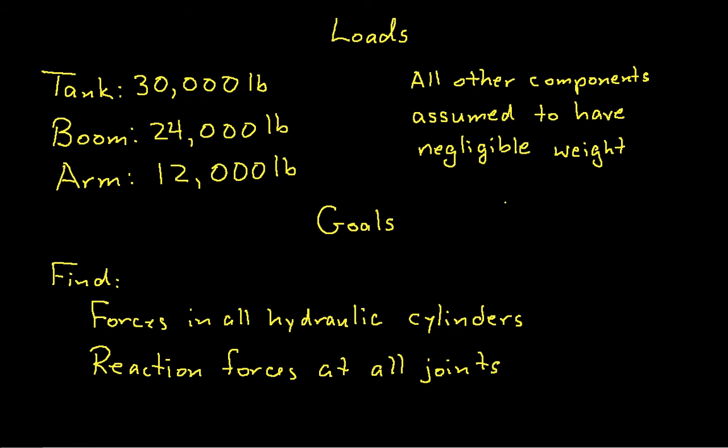We'll assume that the arm weighs 12,000 pounds and the boom weighs 24,000 pounds. These are numbers that are roughly characteristic of the weights of real parts of excavators. And we'll assume all other components will have negligible weight, and it turns out that that's not that bad an assumption.